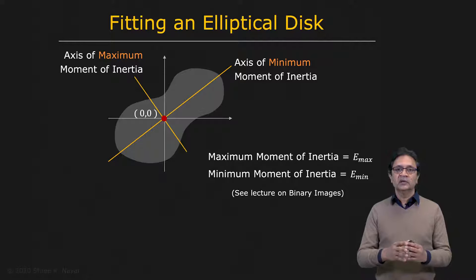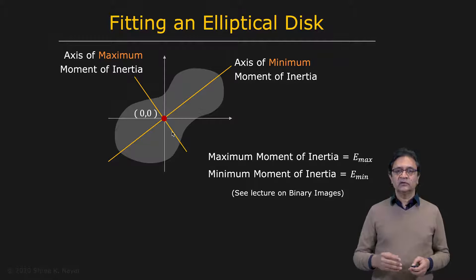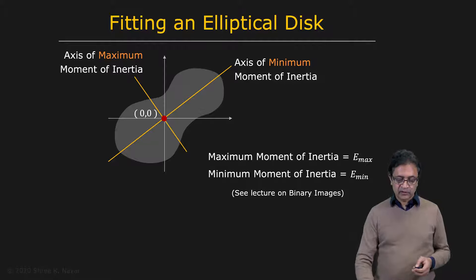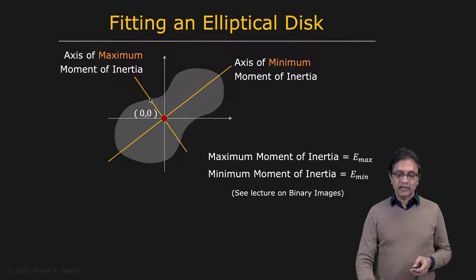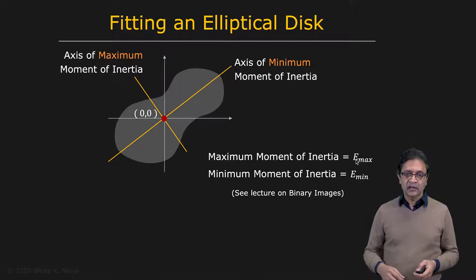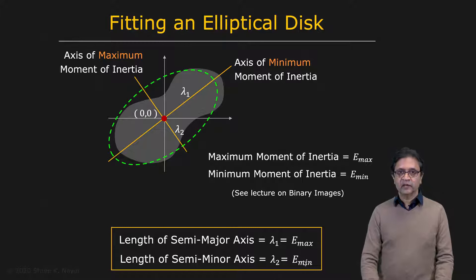To fit an ellipse to a distribution, we go back to our work on binary images. We know how to find the axis of least second moment, also the axis of minimum moment of inertia, and the corresponding minimum second moment e-min. Perpendicular to that is the axis of maximum second moment e-max. The length of the semi-major axis lambda 1 is simply equal to e-max, and the semi-minor axis lambda 2 equals e-min.